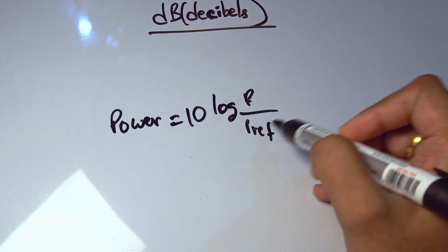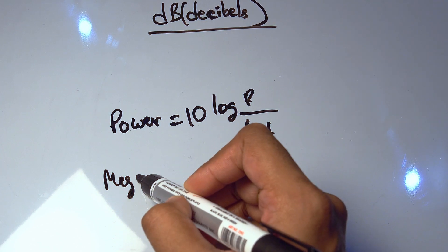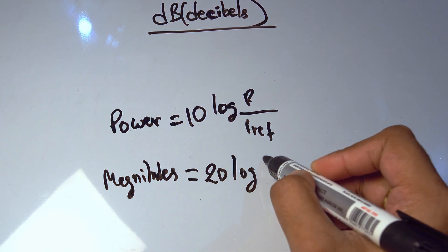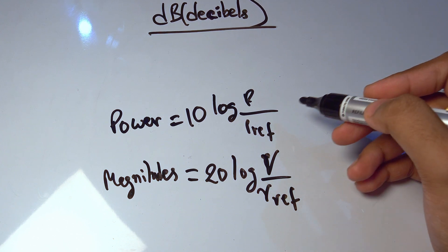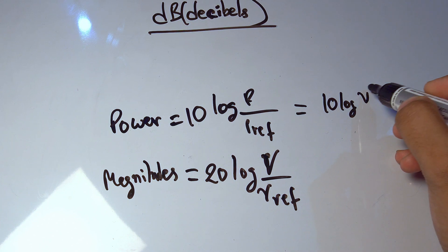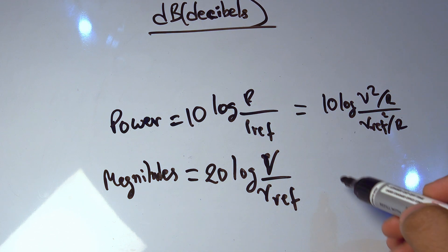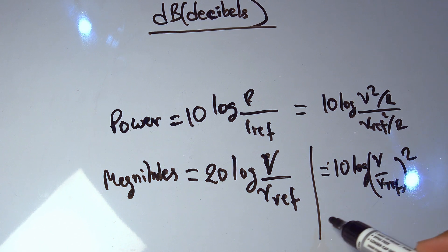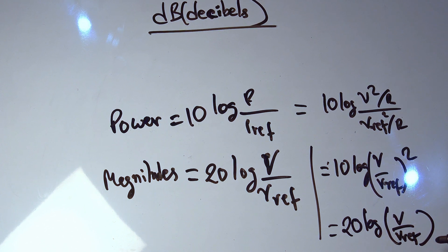Now one confusing part is for powers—for power, the formula of this dB is 10 log P by P ref, this is the reference point from which we are comparing the other value. But for magnitudes, for magnitudes it's 20 log V by V ref. This does have a meaning because if you convert this P to 10 log V squared by R divided by V ref squared by R, cancel the things out, it becomes this. For log is basically 20 log V by V ref. So for magnitudes you see it's 20 log V by V ref.